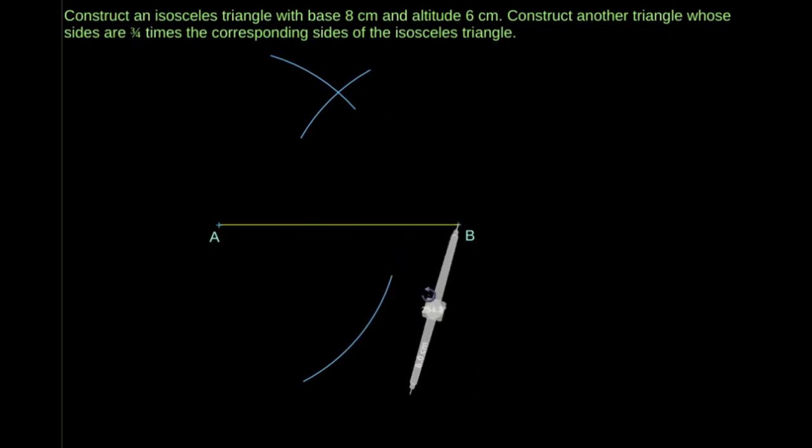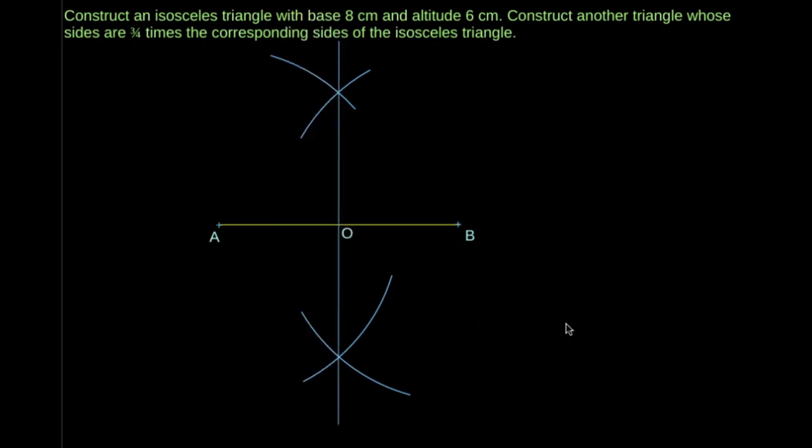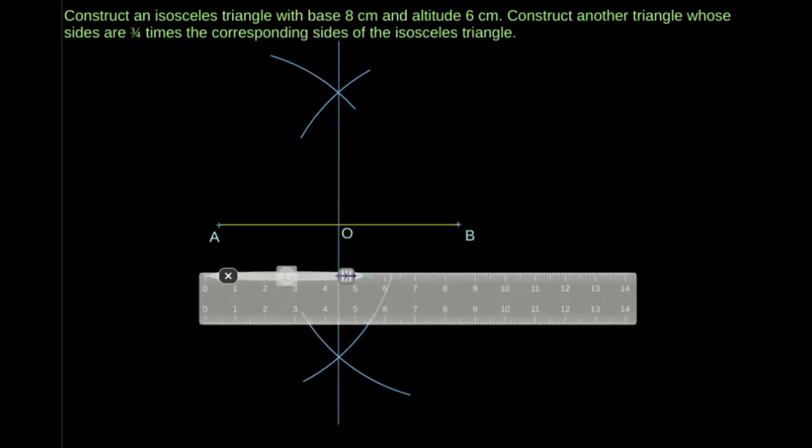Here, the given altitude is equal to 6 cm. With the help of a pair of compasses, draw an arc with radius 6 cm such that it cuts the perpendicular bisector at point C.